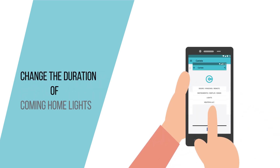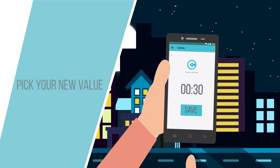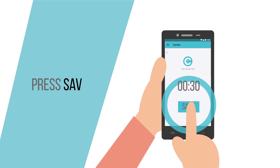These are the lights that stay on and light your way after you lock the vehicle. Pick your new value. Press Save. As easy as that.